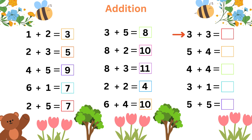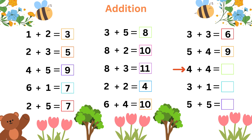3 plus 3 is equal to 6, 5 plus 4 is equal to 9, 4 plus 4 is equal to 8, 3 plus 1 is equal to 4, 5 plus 5 is equal to 10.